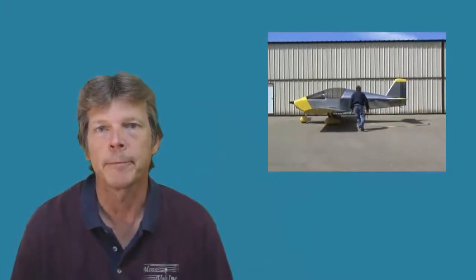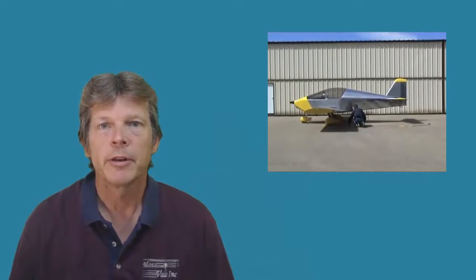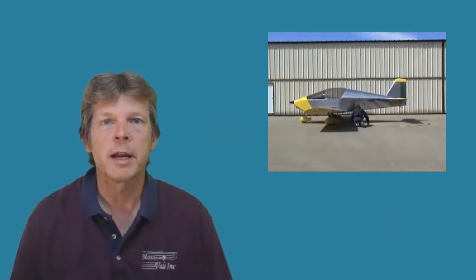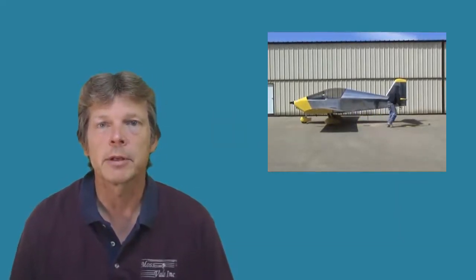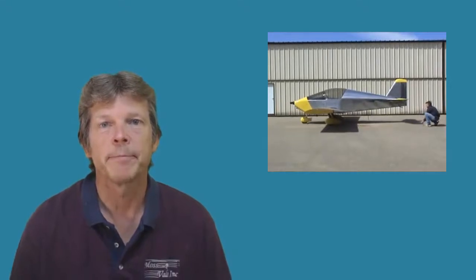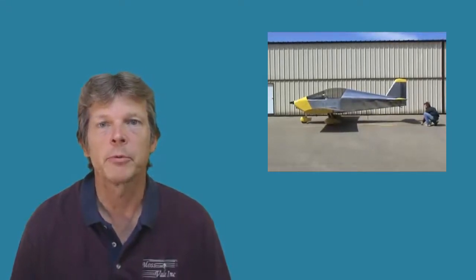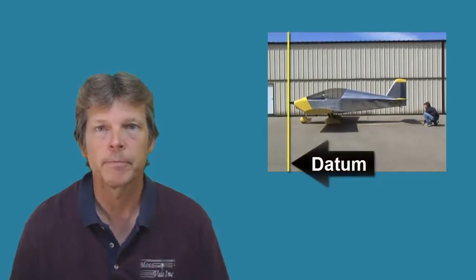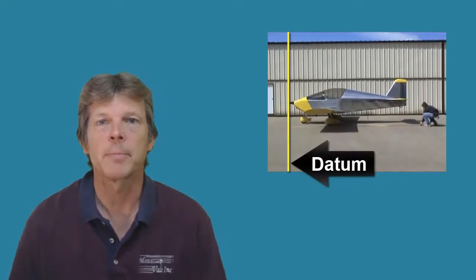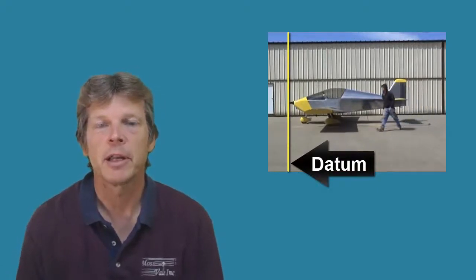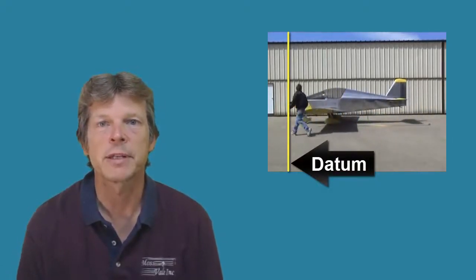Here we have a low wing airplane. The datum on the low wing airplane is measured the same as any datum is. We have to pick a start point. In situation one, we're going to pick a start point which is at the leading edge of the spinner. So I take the tape measure, I put it at the leading edge of the spinner, and I measure back towards the tail.